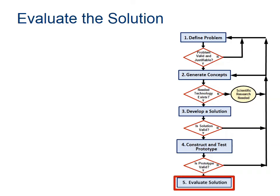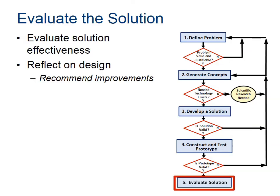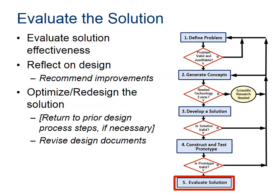Step five is evaluating the solution. Was it effective? Did it do what we wanted it to do? Or in fact, can we do better? You probably can do better because nothing ever works the way it's supposed to the first time. You might find you need a different spring or different material — there are all kinds of things you can improve upon. You'll find that as we go through all the design projects in our class. The deliverable here is the project recommendations report, which can come in various forms.